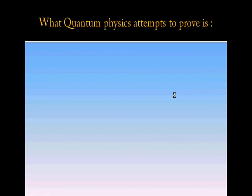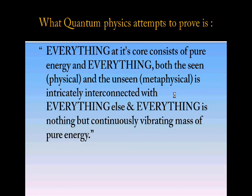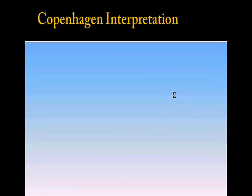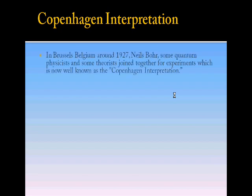So what quantum physics attempts to prove is everything at its core consists of pure energy, and everything—both the seen, that is physical, and unseen, metaphysical—is intricately connected with everything else. Everything is nothing but a continuously vibrating mass of pure energy. During that time, an interesting concept was floated by the name of Copenhagen interpretation. Let's find out what it is.